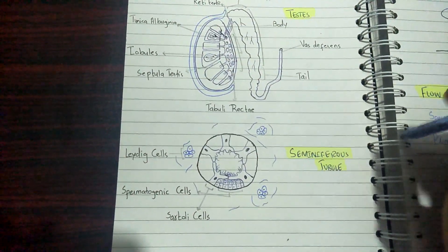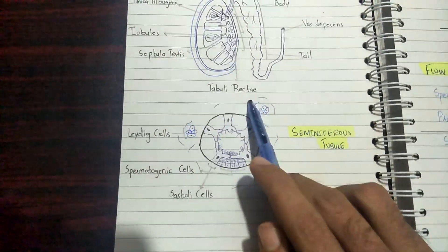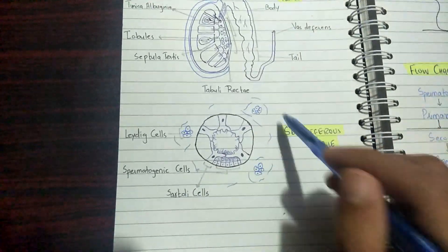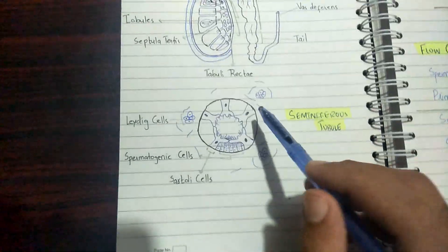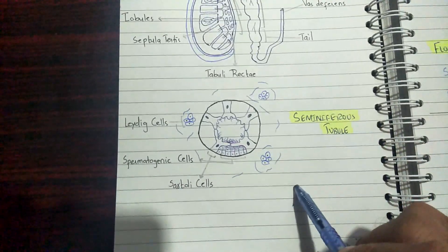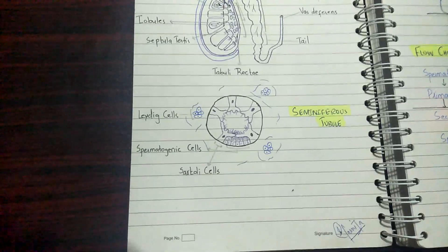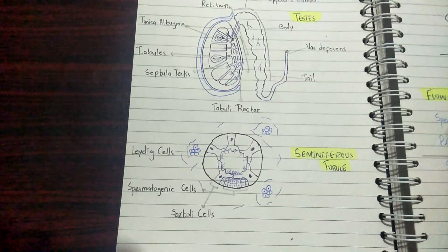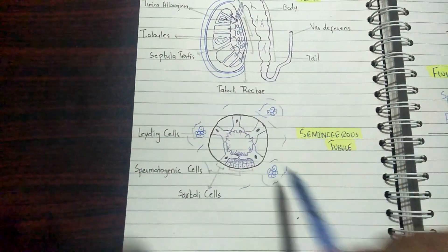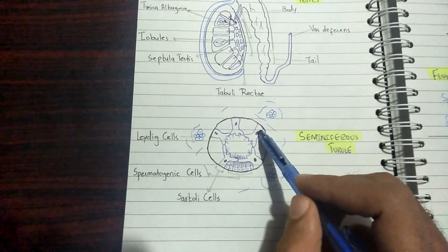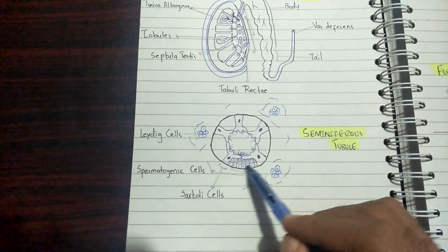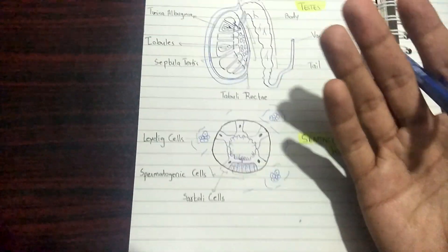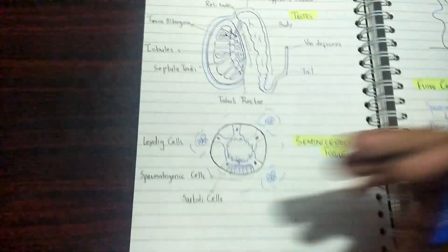If we take a cross-section of a seminiferous tubule, we find a circular structure containing cells and an outer epithelium. There are important cells in the interstitium known as Leydig cells, which are responsible for the formation of testosterone. The tall columnar cells are the Sertoli cells, and the somewhat cuboidal cells are the spermatogenic cells — 'genic' meaning producing, so spermatogenic cells are cells that produce sperms.